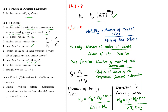The mole fraction formula is: number of moles of the component divided by total number of moles of all components — this gives the partial pressure in the solution.